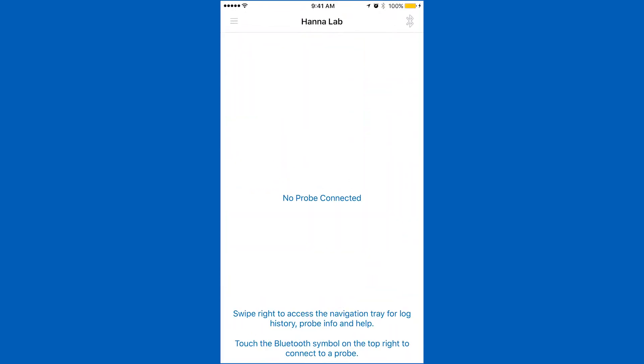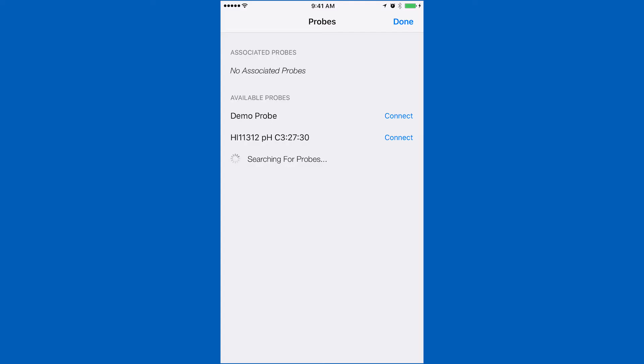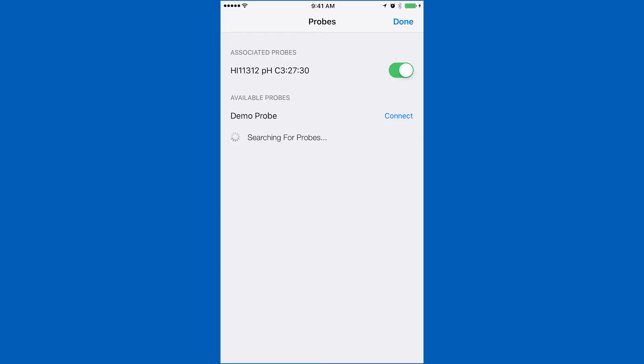To connect your Halo, be sure Bluetooth is enabled on your device. Open our HANA Lab app and press the Bluetooth symbol. Press the button on your Halo and our app will recognize the electrode. Tap connect and you'll be ready to calibrate.